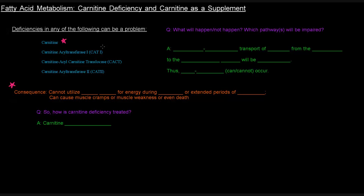There obviously can be deficiencies in the role players of that pathway. As we mentioned before, we had carnitine, we had CAT1, CAT2, and then the carnitine acyl-carnitine translocase protein as well.